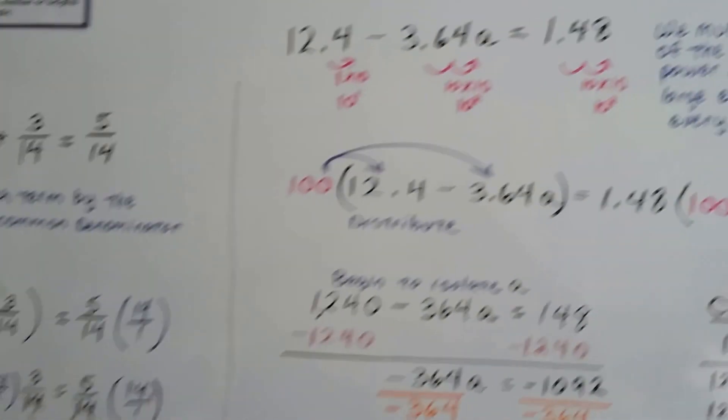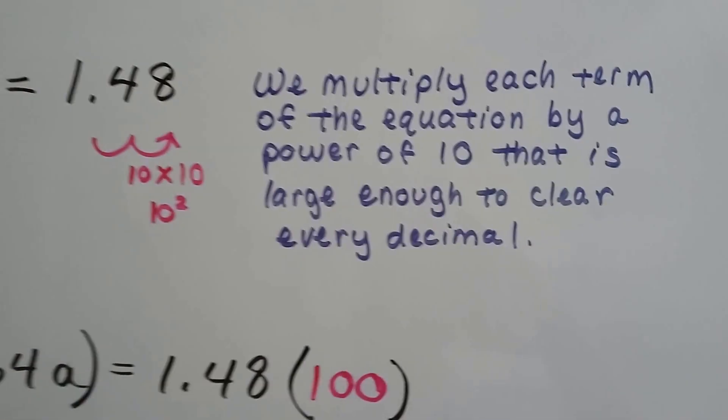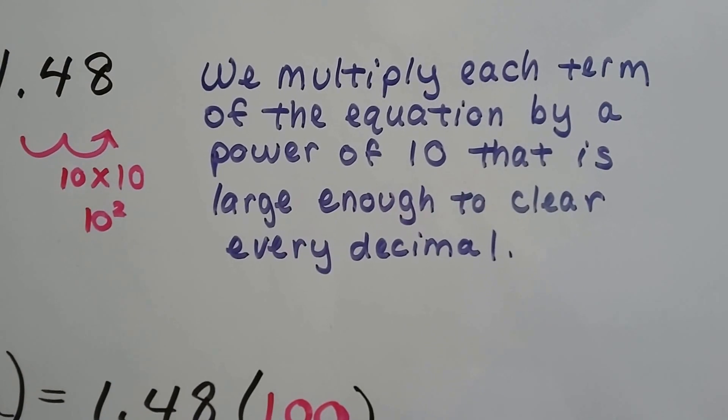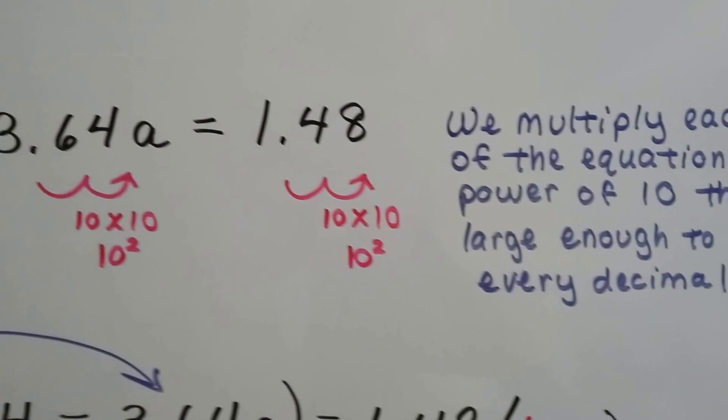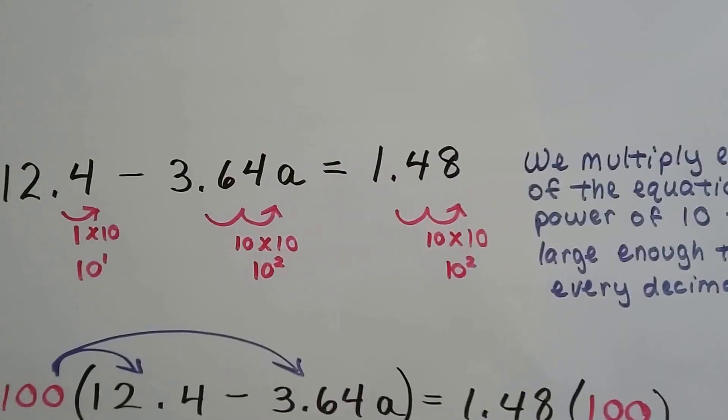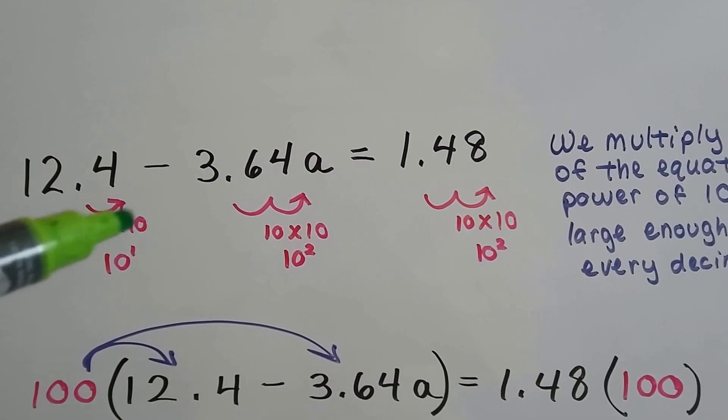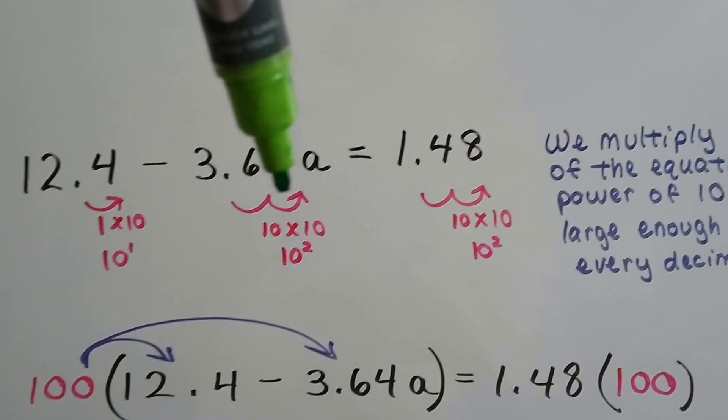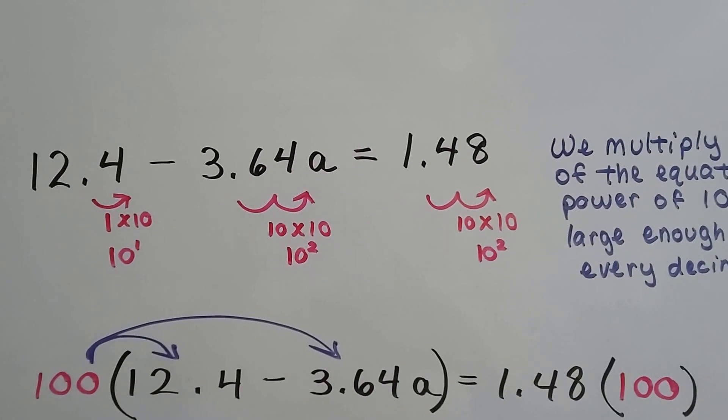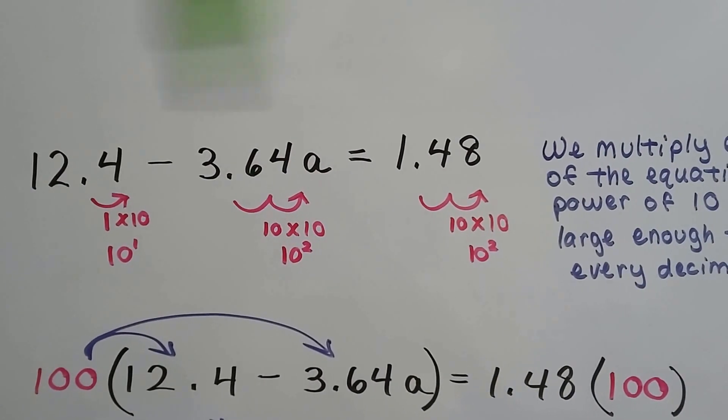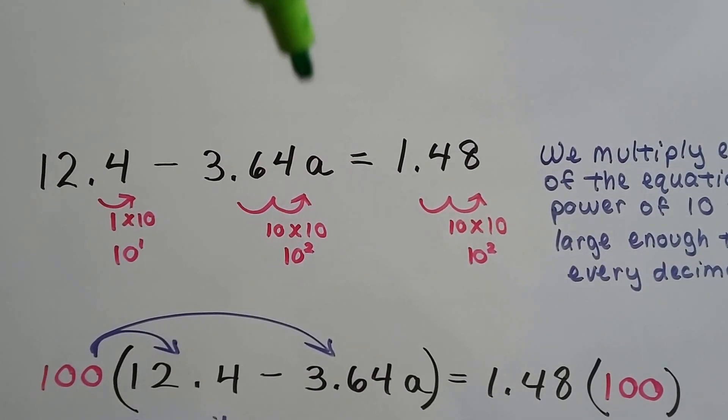And then decimals, to clear out decimals, all we need to do is we need to multiply each term of the equation by a power of 10 that's large enough to clear every decimal. So if we look at this problem, we've got 12.4. Well, that's only one decimal space to get rid of it, so that's 10 to the first power. Well, this one's got 2, so that's 10 to the second power, 10 times 10, and this one's also got 2. So in order to clear every decimal, we're going to have to go with the 10 times 10.